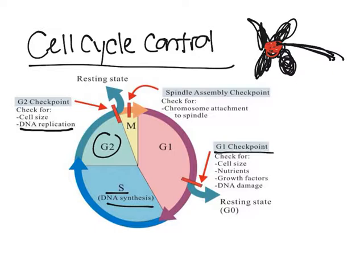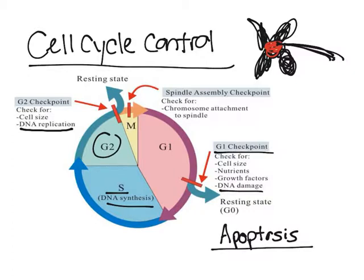On to the G1 checkpoint. After mitosis has occurred, the cell is going to check if DNA is damaged. More specifically during G1, if the cell is damaged, it can undergo apoptosis, which is programmed cell death — essentially the cell committing suicide.